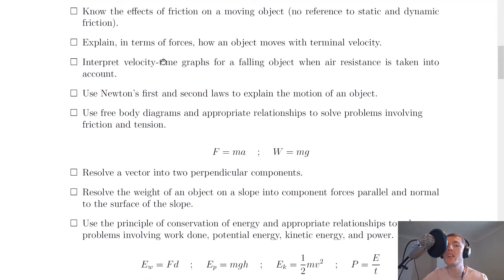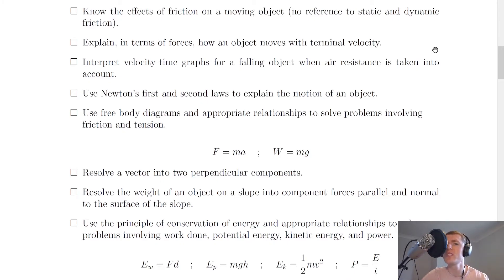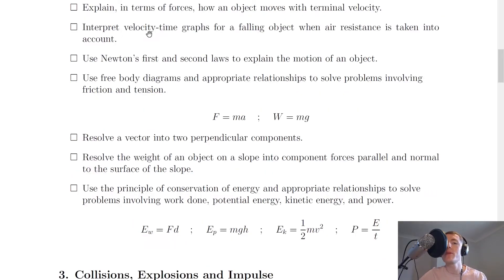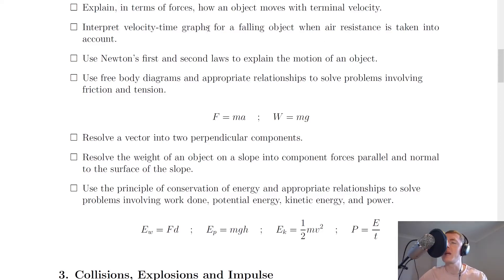You need to explain in terms of forces how an object moves with terminal velocity. A skydiver jumping out of a plane reaches terminal velocity when the forces become balanced — when their weight downwards equals the upward drag force. You also need to interpret velocity-time graphs for a falling object when air resistance is taken into account. When air resistance is included, you get curves instead of straight lines because the acceleration is no longer constant due to unbalanced forces.